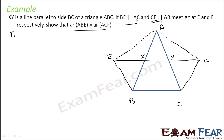What is given: BE is parallel to AC, and CF is parallel to AC. So we notice that BE is parallel to AC and EF is parallel to AC.